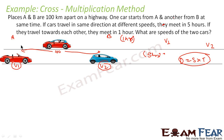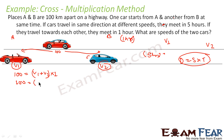In both cases, distance equals speed times time. In the first case, 100 km equals relative speed (V1 plus V2) times time of 1 hour. In the second case, the distance is still 100 km but the relative velocity is V1 minus V2, multiplied by 5 since it takes 5 hours. The red car is V1 because it is going faster.